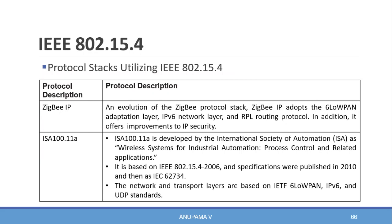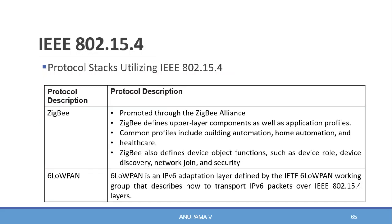ZigBee is promoted through the ZigBee Alliance. ZigBee defines upper layer components as well as application profiles. Common profiles include building automation, home automation, and healthcare. ZigBee also defines device object functions such as device role, device discovery, network join, and security.